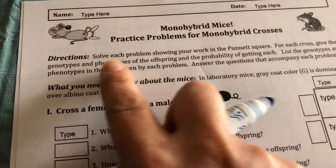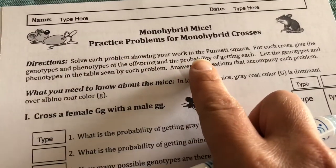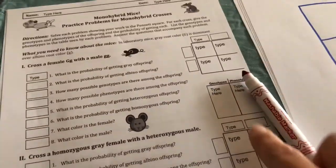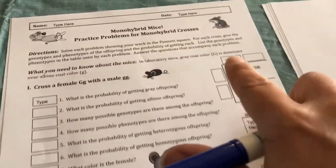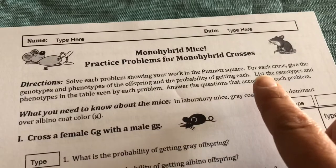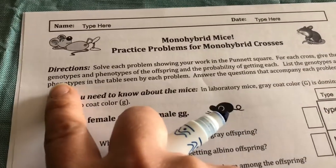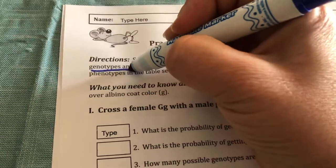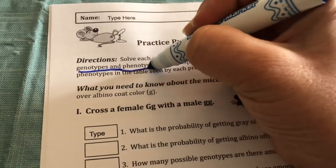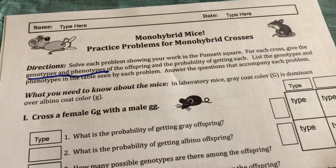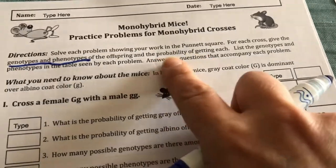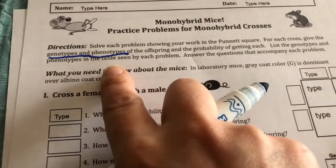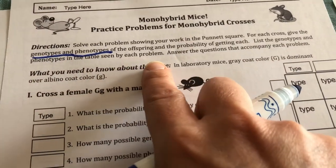Let's look at the directions. Solve each problem showing your work in the Punnett square. These are the Punnett squares and you can type in them. For each cross, give the genotypes and the phenotypes of the offspring and the probability of getting each.